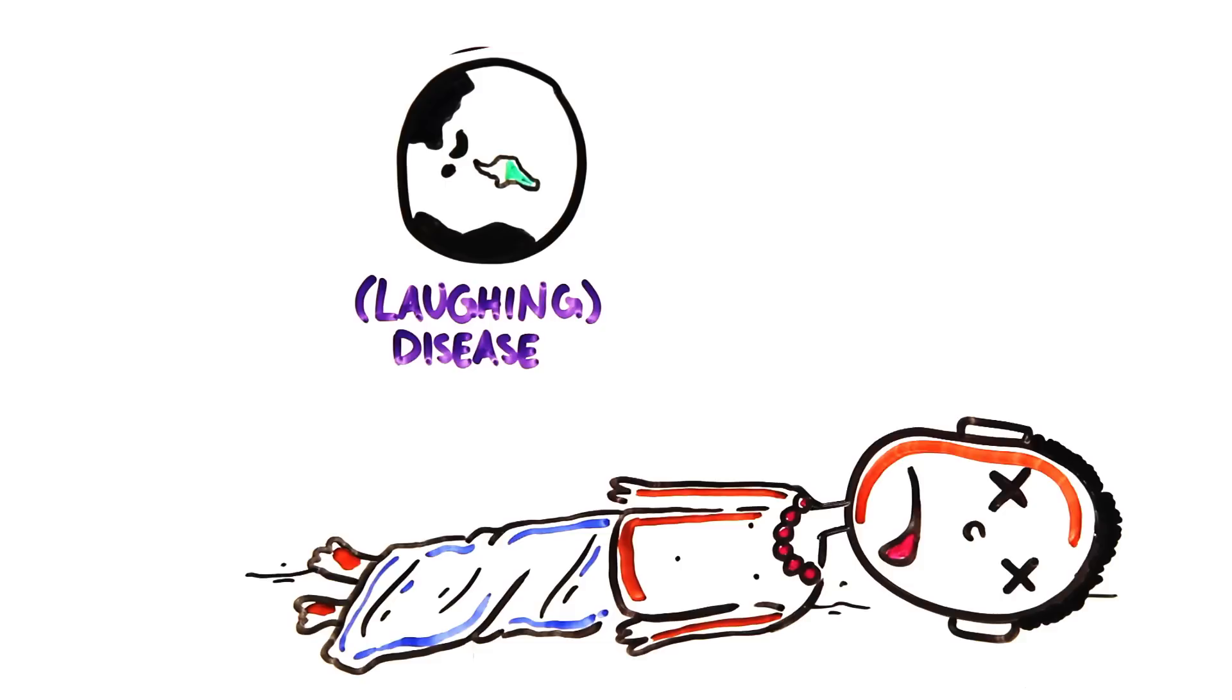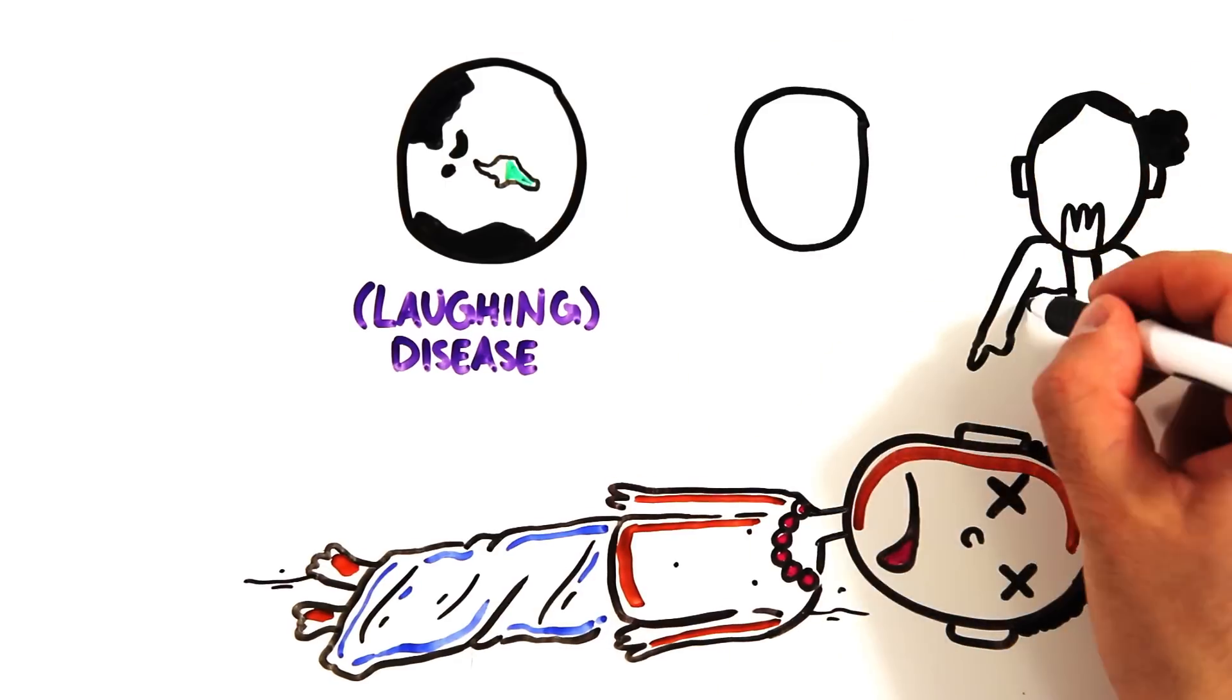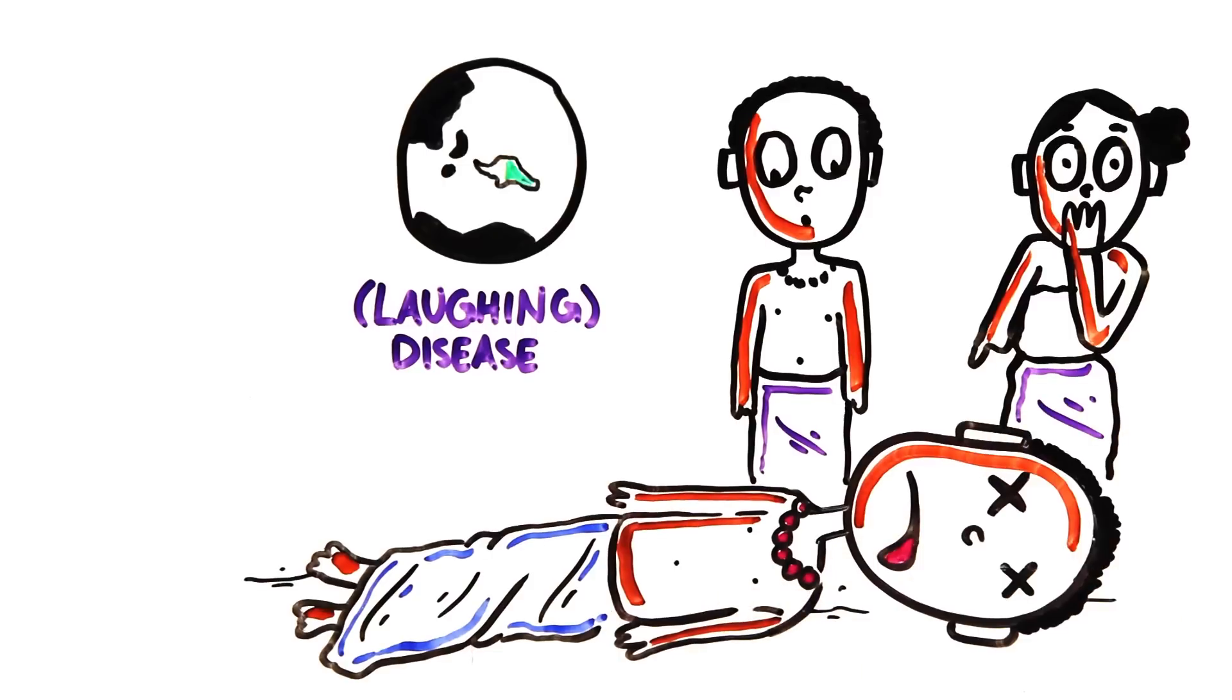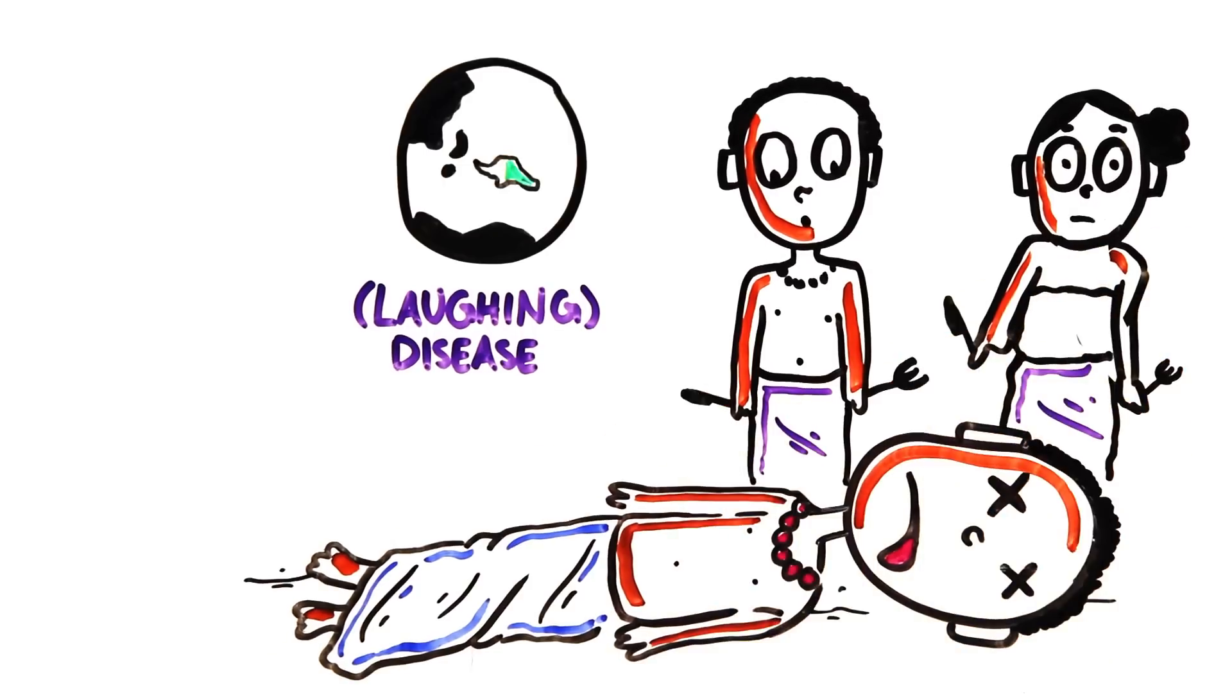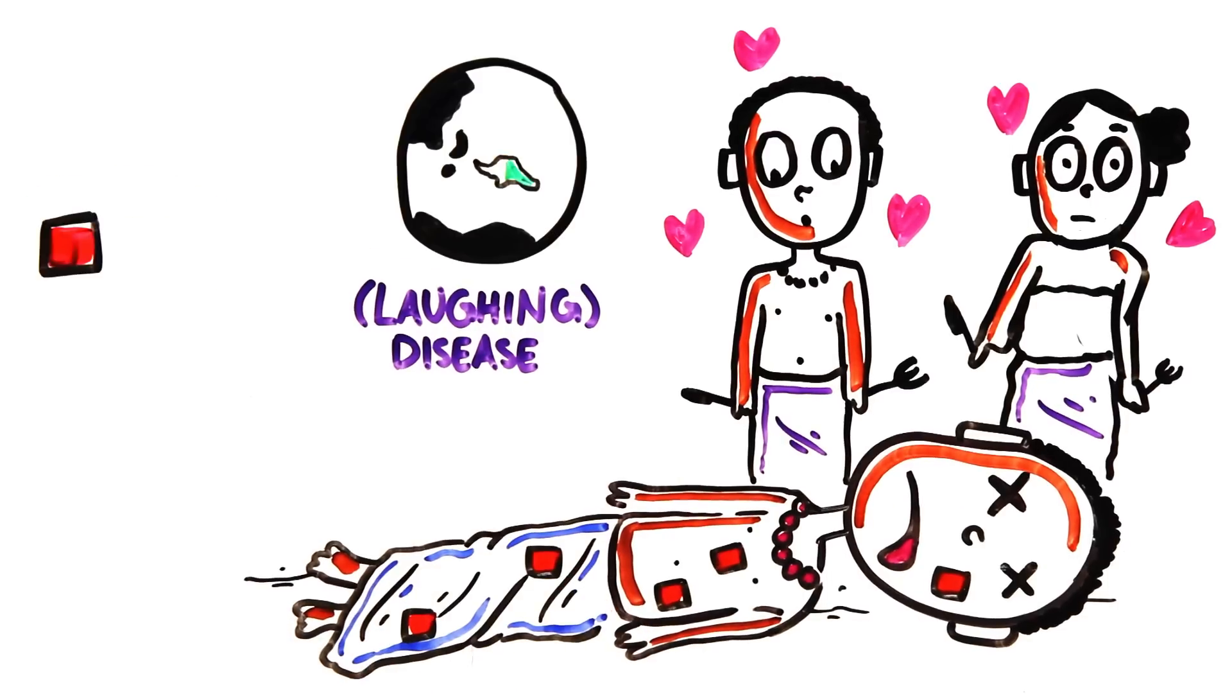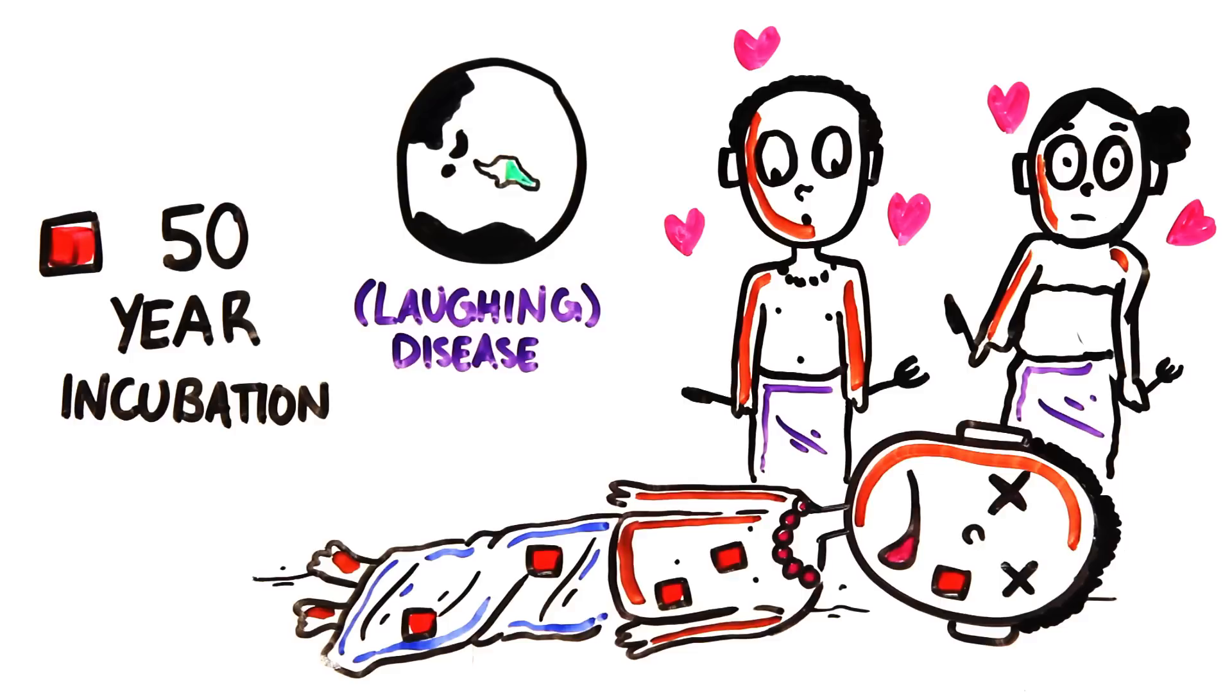It turns out that Kuru was a prion disease which was contracted through their funeral practices. The Fore people believed it was better for the body to be eaten by the people who loved them than by worms and insects. And though the practice is believed to have stopped, the incubation of prion disease can take up to 50 years, meaning new cases could still reveal themselves.